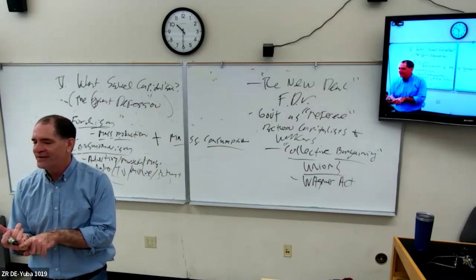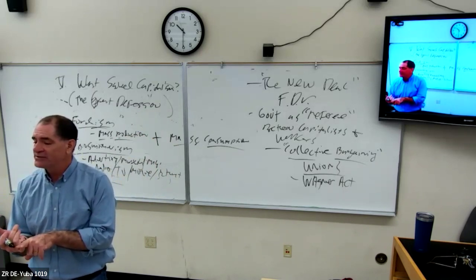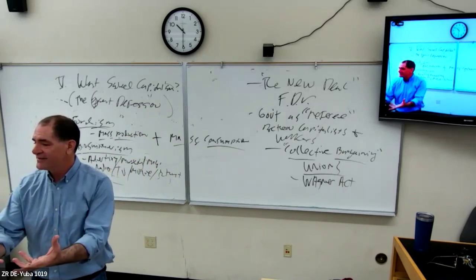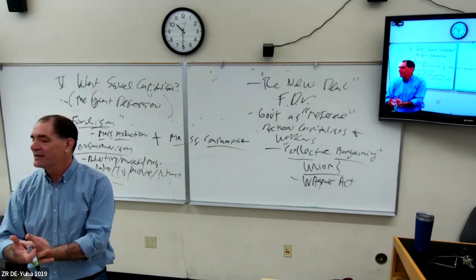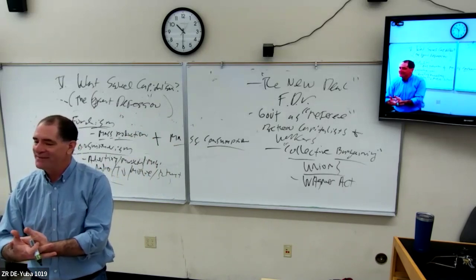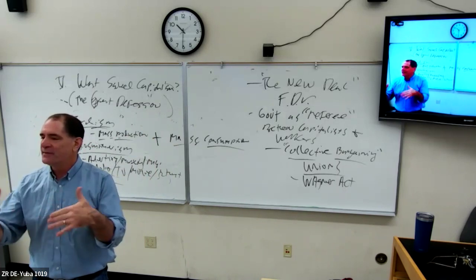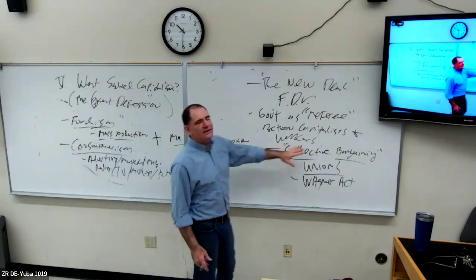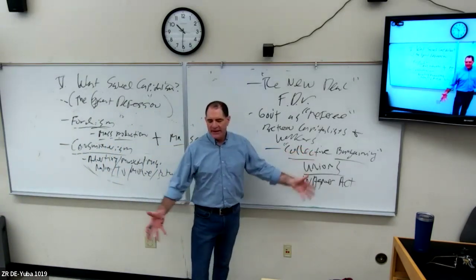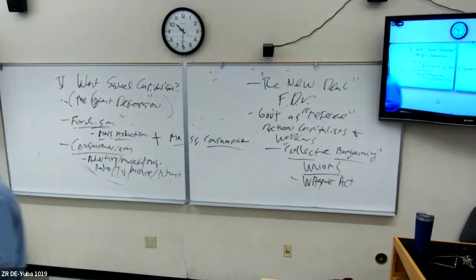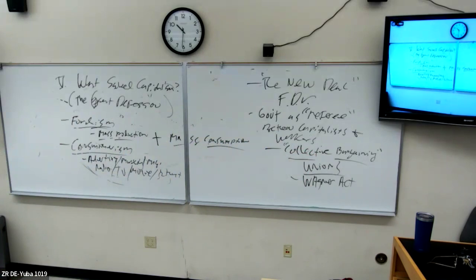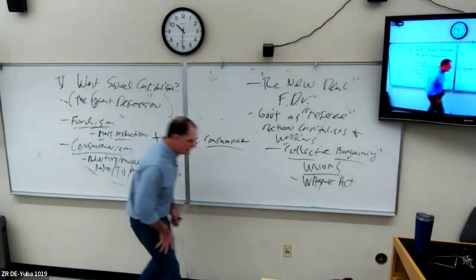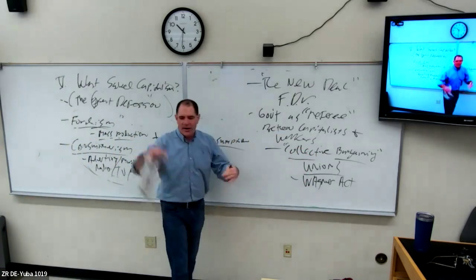Under the Wagner Act you have to follow careful procedures: take votes, show a majority wants it, and if you're going to do a strike or picket line you have to give notice to bosses and state your demands. There are a lot of rules about how unions function. But it led to a big change in America — lots of working people got to be part of unions and got paid a lot more than when they were just individually exploited factory workers.